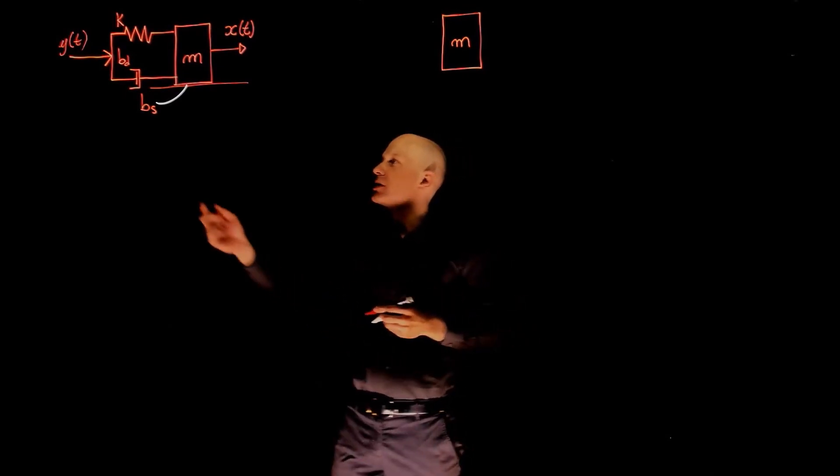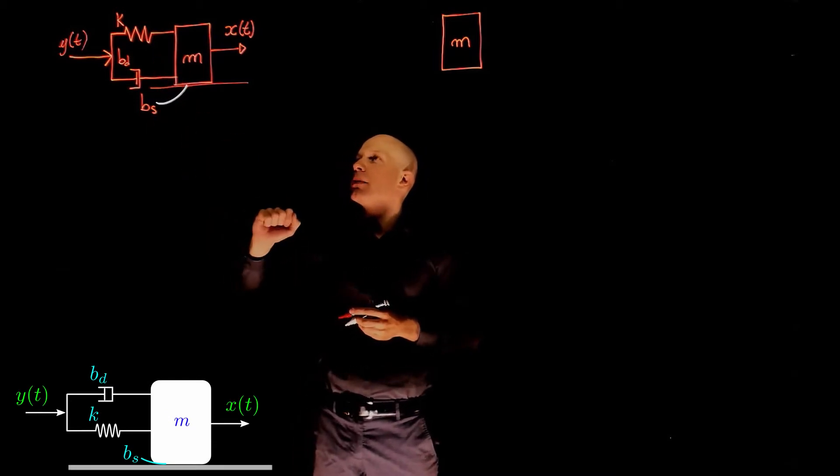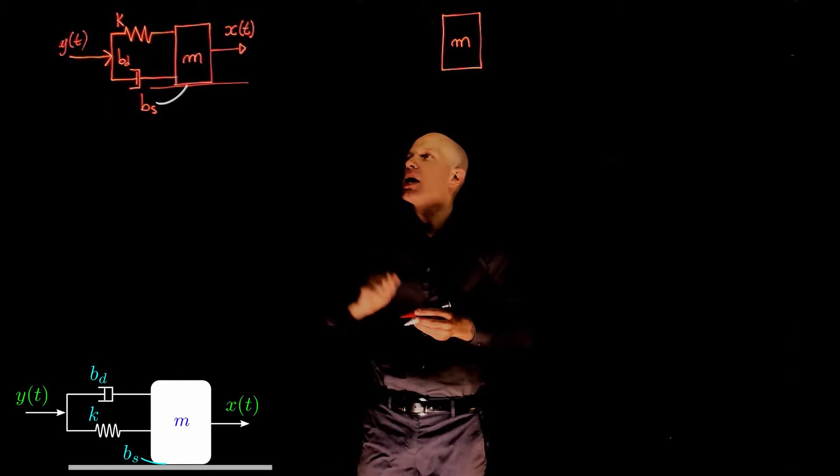In this system, an input displacement y(t) is applied to the mass through a spring and a damper, and the displacement of the mass as a result of that input is x(t).